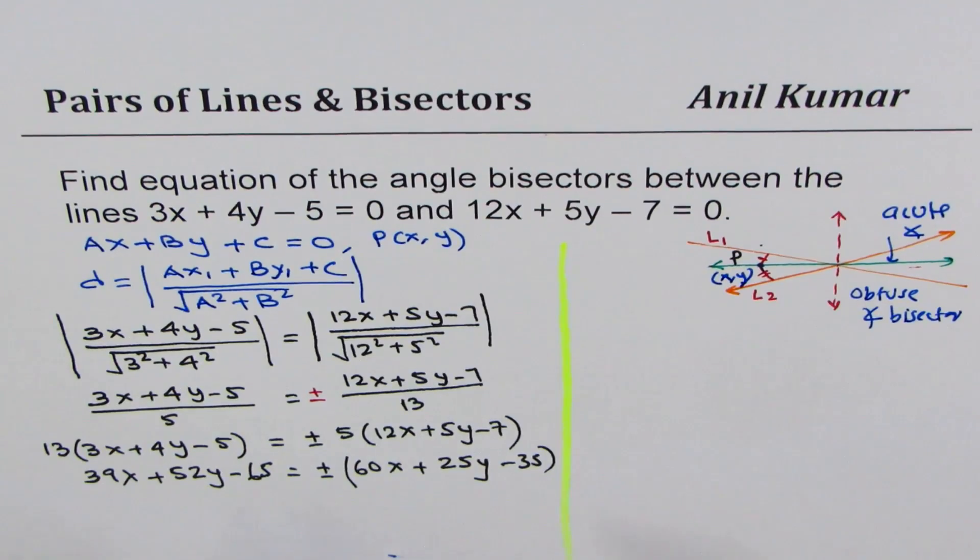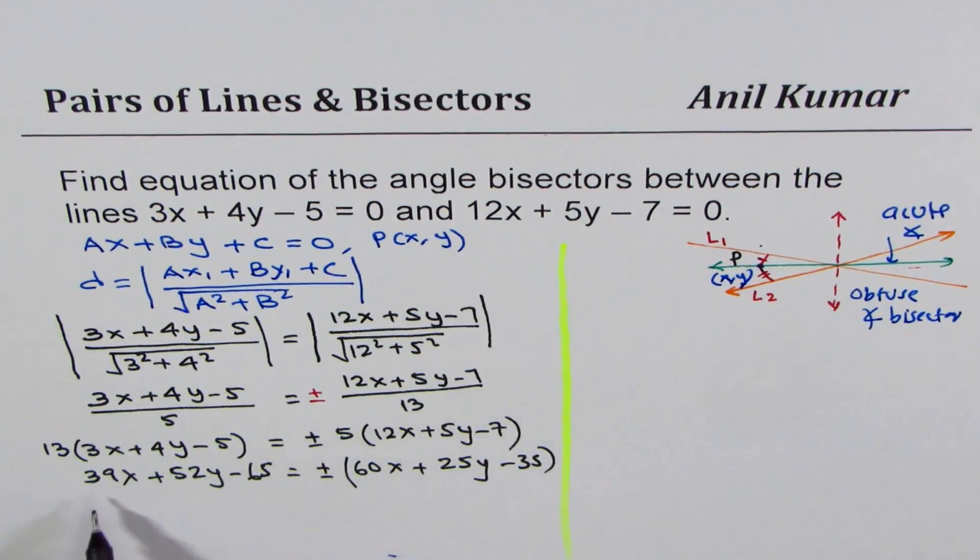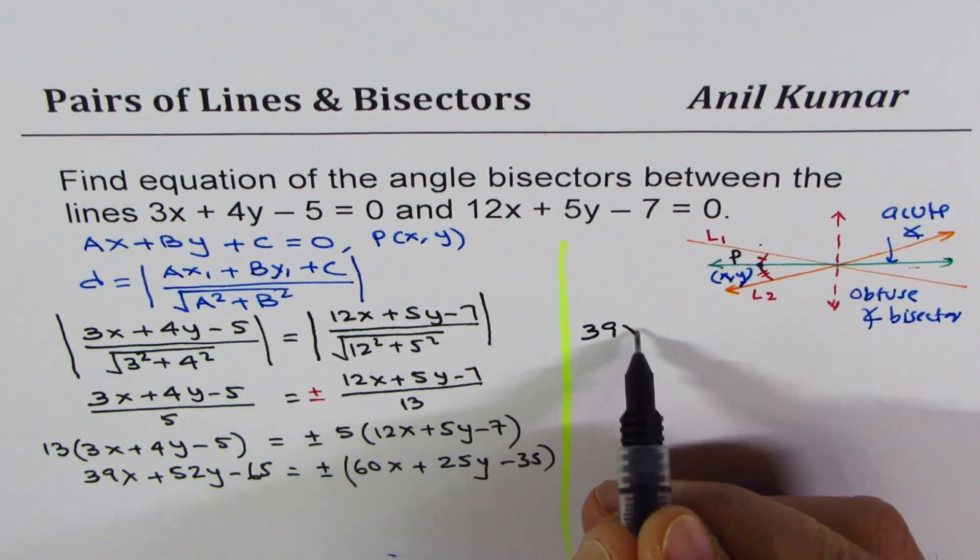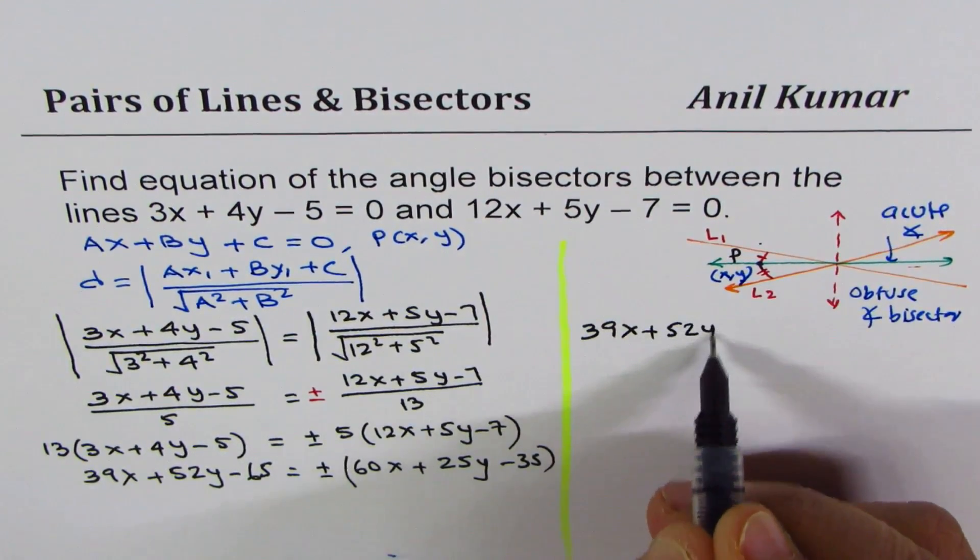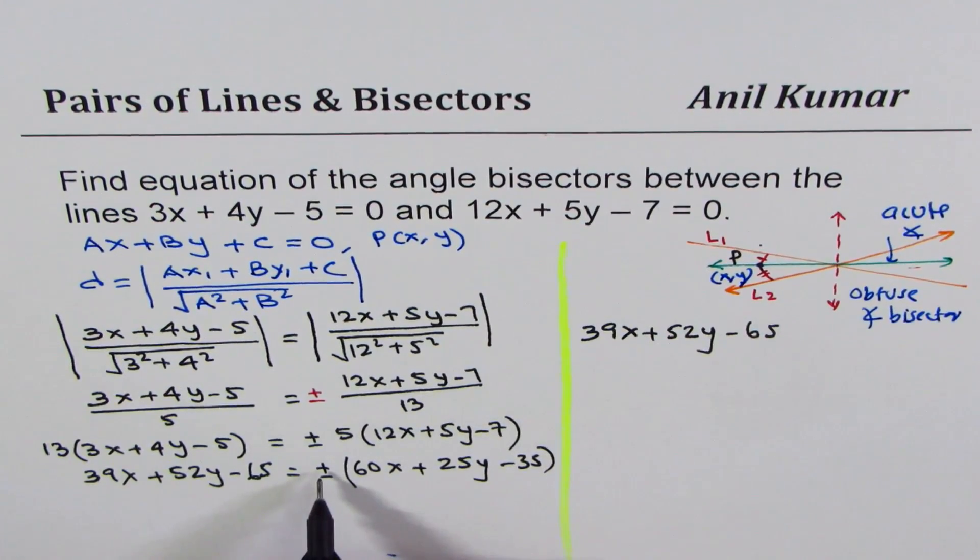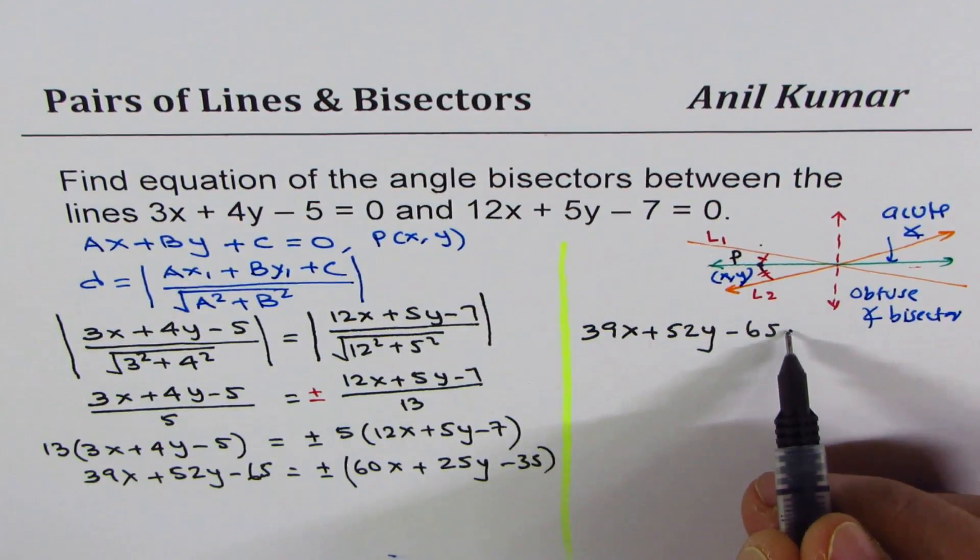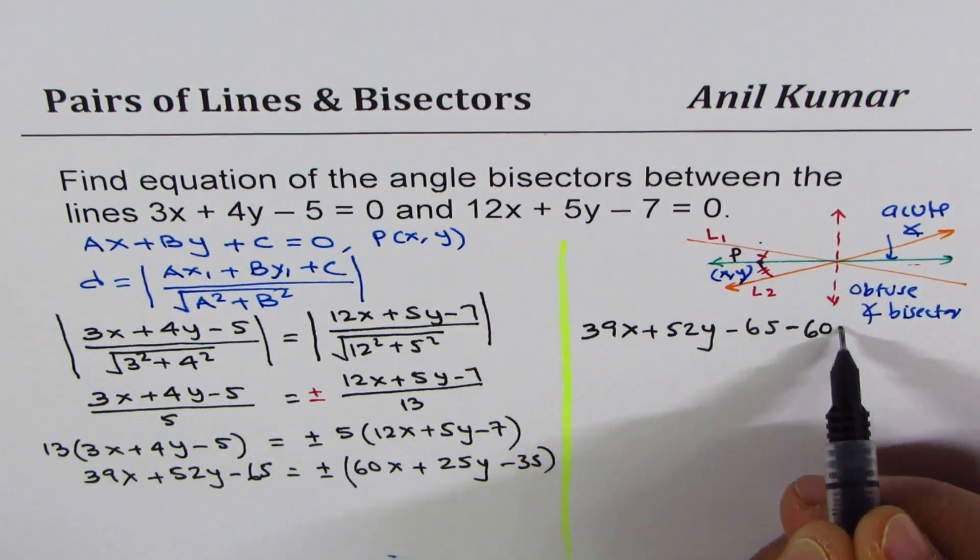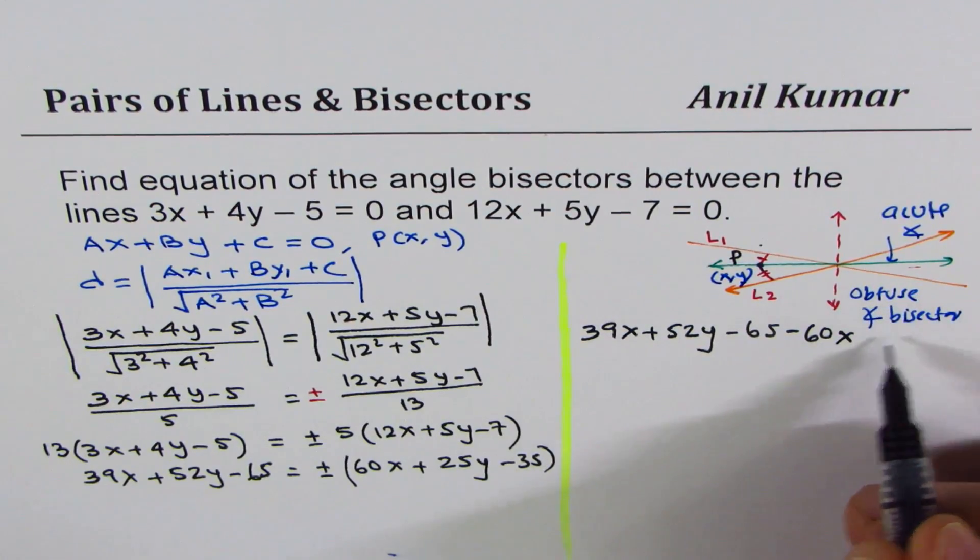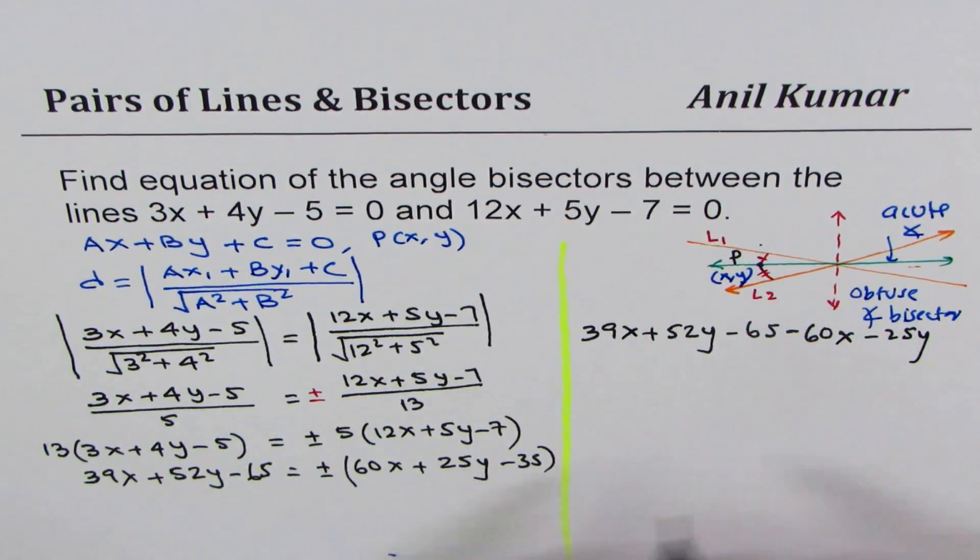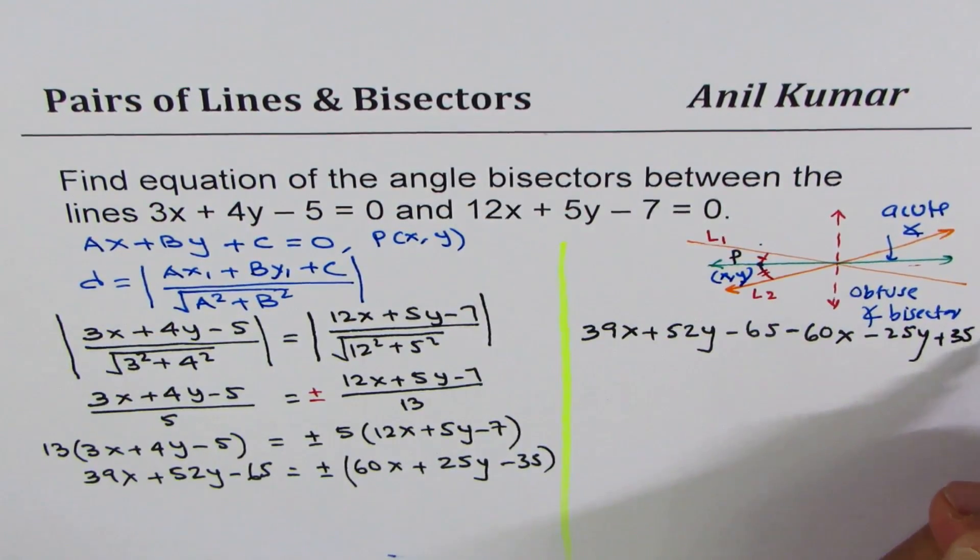We can bring all terms to one side. We have 39x + 52y - 65 on the left. Using the plus case and bringing the right side over: -60x - 25y + 35 = 0.